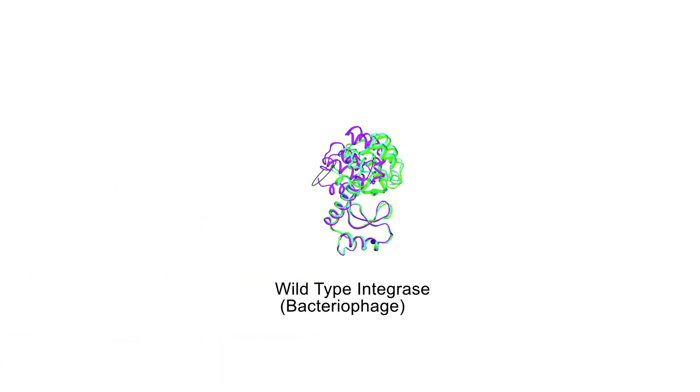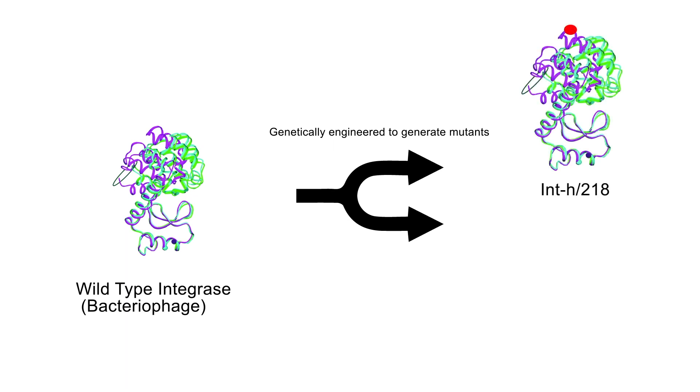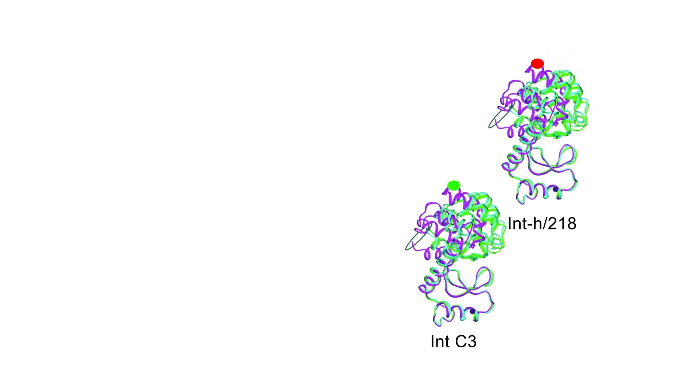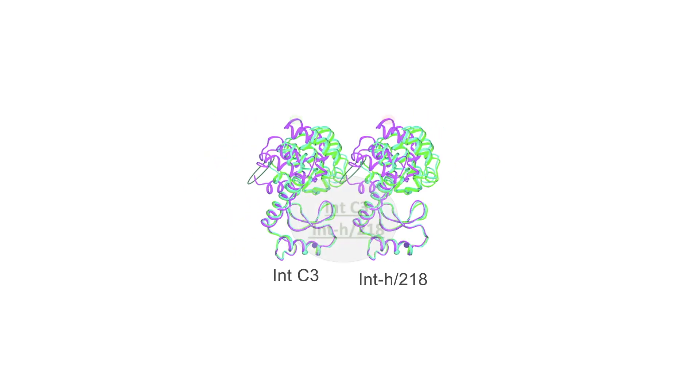This natural bacteriophage lambda system has been exploited as an insertion tool in eukaryotes. The wild-type int integrase has been engineered to generate mutants termed int H218 and int C3 that catalyze recombination independently of cofactors and have enhanced targeting efficiency and specificity to non-cognate sequences other than wild-type att sites.